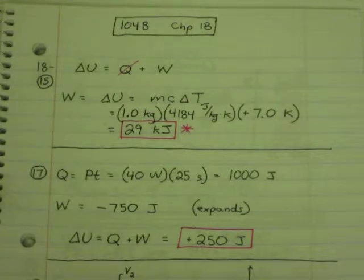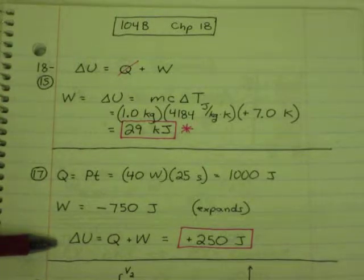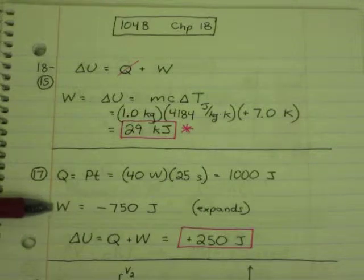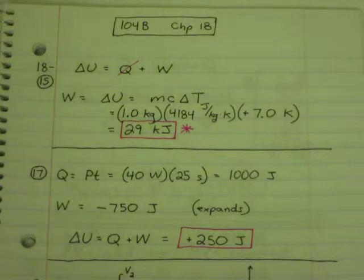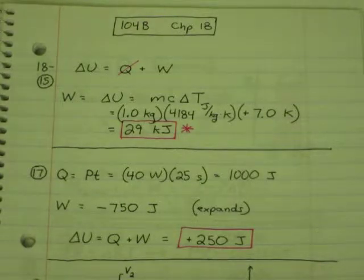So if you come down here at the bottom of the screen, first law of thermodynamics says change in internal energy is Q plus W. We know that W is negative 750 joules. It's negative because the gas expands. We just need Q. So Q is power times time, 40 watts times 25 seconds is 1,000 joules.